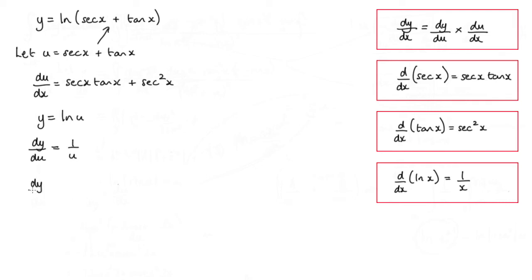Now we're looking for dy/dx. Using the chain rule, dy/dx equals dy/du times du/dx. So dy/du is 1/u, and that's multiplied by du/dx, which is this term here. I'll put that in brackets: sec x tan x + sec² x.